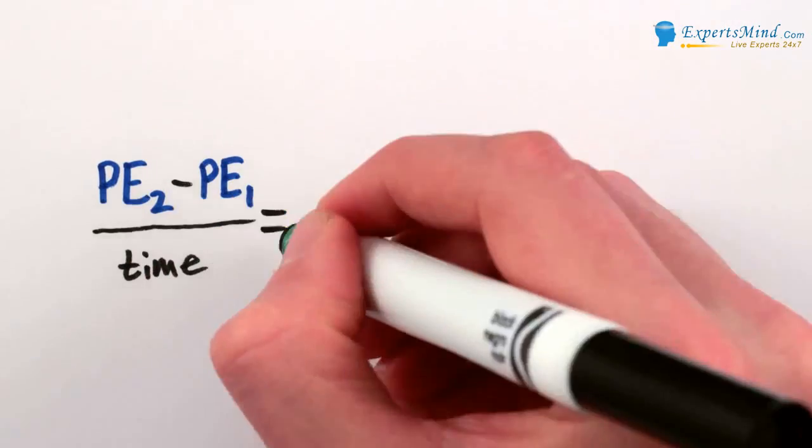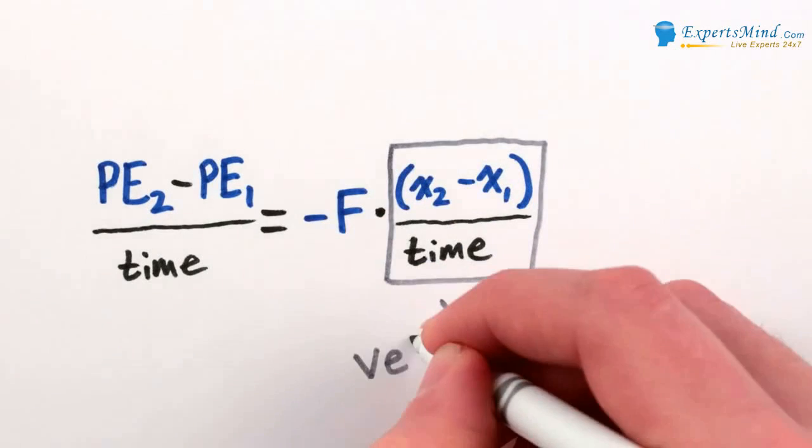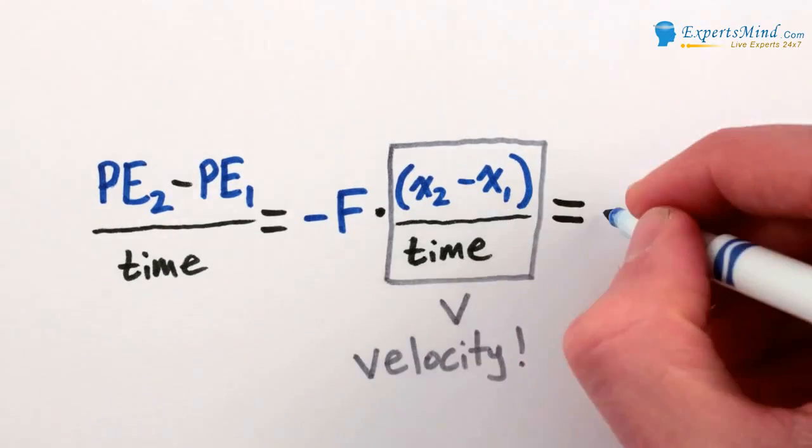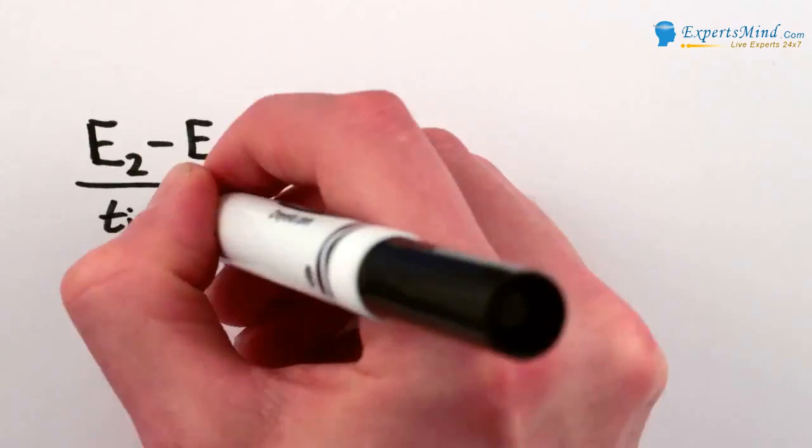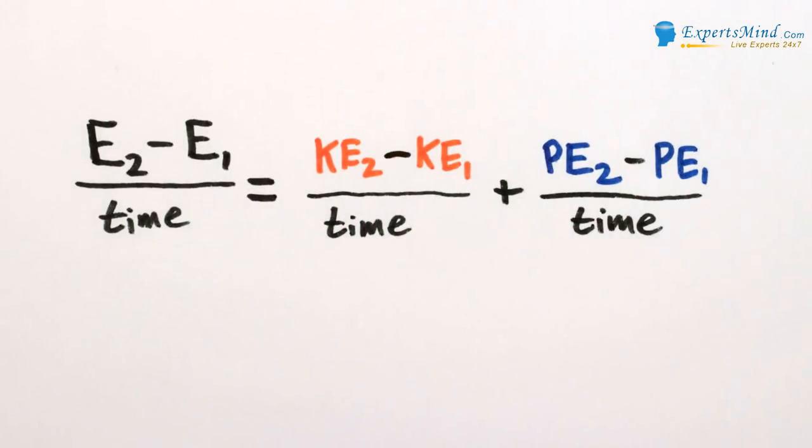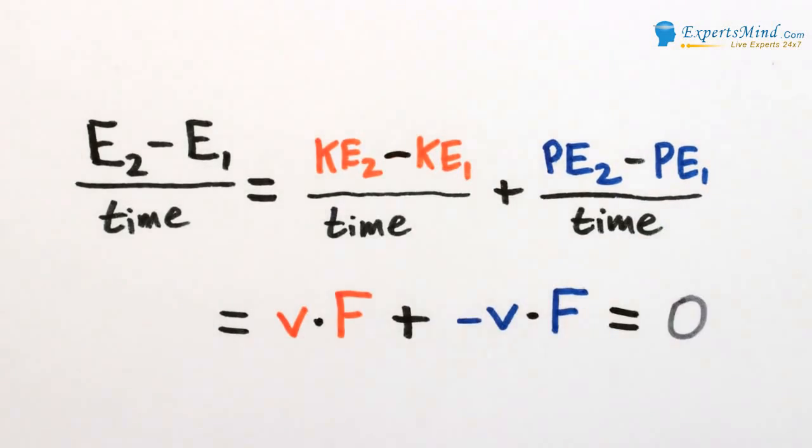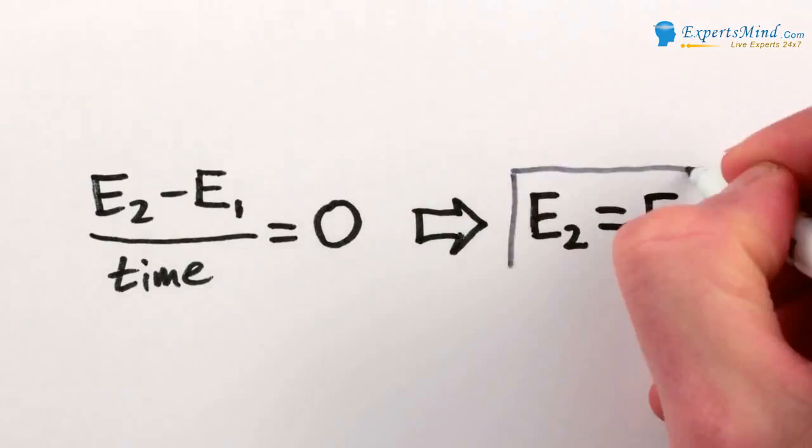So the change in potential energy over time is the negative of the force times the change in position over time. But change in position over time is velocity, which means change in potential energy of an object over time is negative velocity times force. And thus, the change in the total energy over time, which is the sum of the changes in the kinetic and potential energies over time, is V times F plus negative V times F, which equals zero. And zero change in energy over time is precisely conservation of energy.